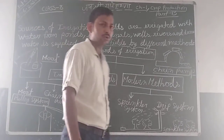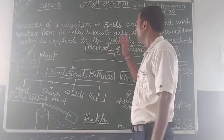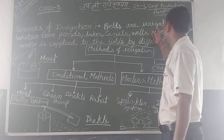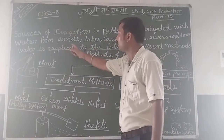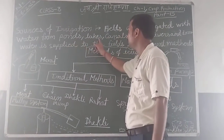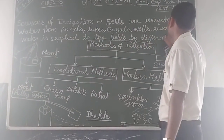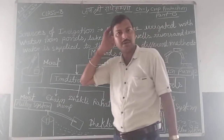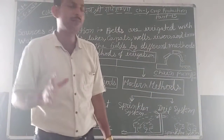What is the source of irrigation? Fields are irrigated with water from ponds, lakes, tanks, wells, rivers, and dams.